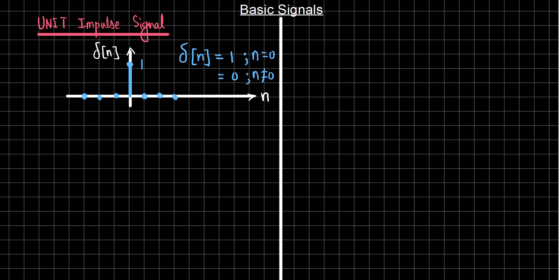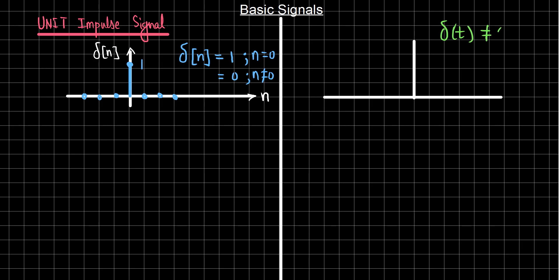As we have this unit impulse signal for the discrete time case, we can have a similar kind of unit impulse signal for the continuous time case. For the continuous time case, the unit impulse is not that straightforwardly defined. It is defined mathematically as δ(t), and we write the mathematical expression first.